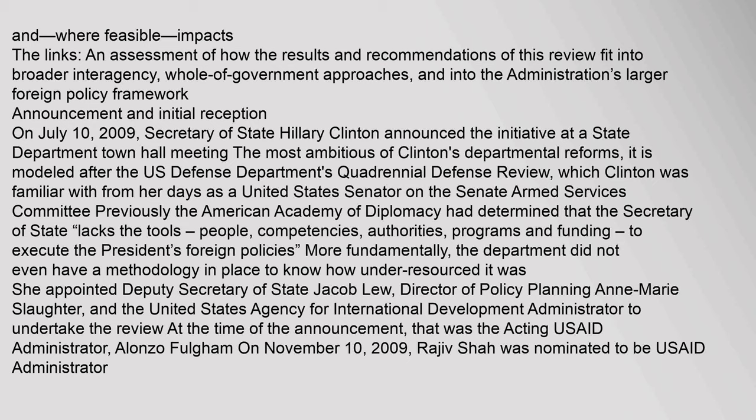More fundamentally, the department did not even have a methodology in place to know how under-resourced it was. Clinton appointed Deputy Secretary of State Jacob Lew, Director of Policy Planning Anne-Marie Slaughter, and the United States Agency for International Development Administrator to undertake the review. At the time of the announcement, that was the acting USAID Administrator, Alonzo Fulgham. On November 10, 2009, Rajiv Shah was nominated to be USAID Administrator.